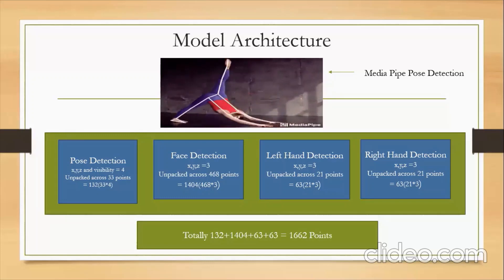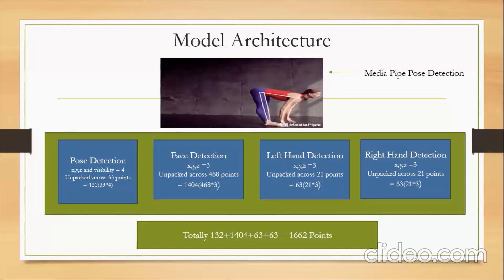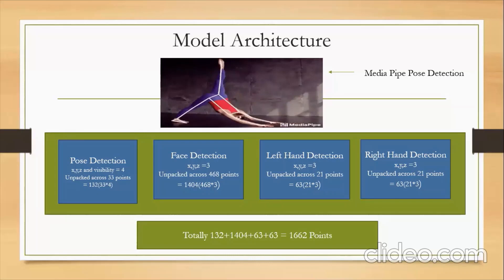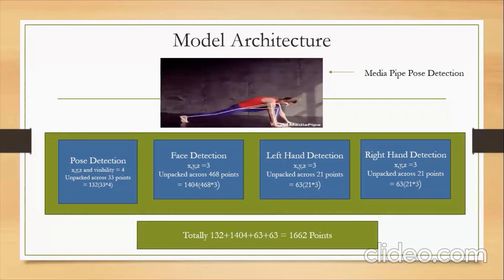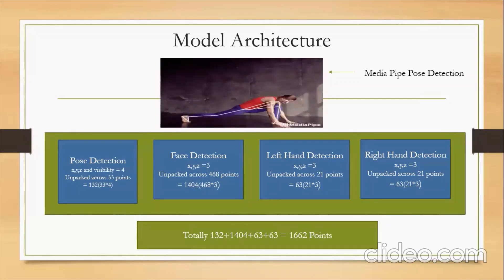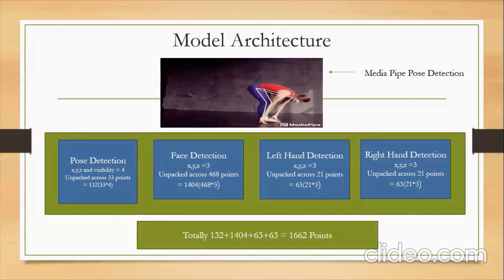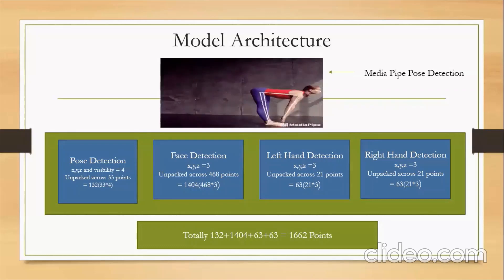Face detection gives X, Y, Z coordinates and has close to 468 points — these are the contours you see on the face. Since it has three points per keypoint, 468 multiplied by 3 gives 1404 points. The same explanation applies for left hand and right hand detection. Adding everything up per frame, we are monitoring close to 1662 points when flattened, which is what we'll be sending as input to the model.